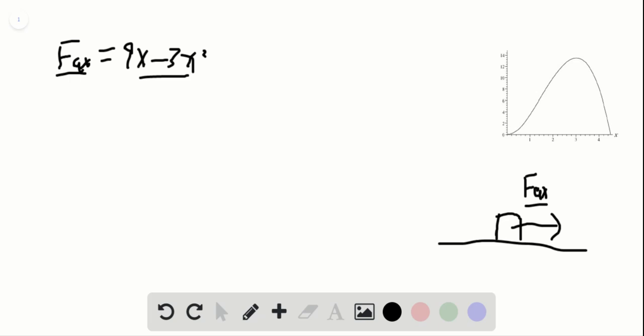And so for part A, we want to show the relation between the work and the displacement. To find out the work, we need to utilize the definition. So FAx dot dx. And so it's simply equal to 9 over 2 x squared minus x cubed. So this is the work expression.